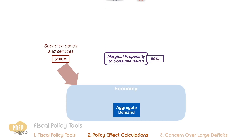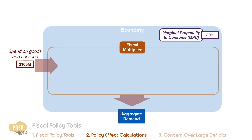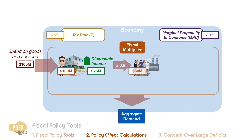Another important concept to understand is that of the fiscal multiplier. When the government spends $100 million, the net effect on aggregate demand is multiplied by this factor. To understand this, let's follow where the money goes. When the government spends $100 million in the economy, this amount goes to companies and individuals who provided the goods and services. If the tax rate is 25%, the net increase in disposable income to them is $75 million. With an MPC of 80%, these recipients will spend $60 million on other goods and services in the economy.